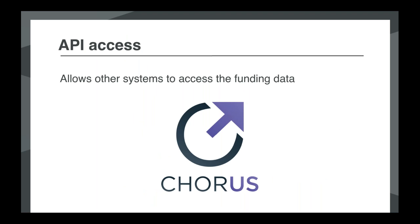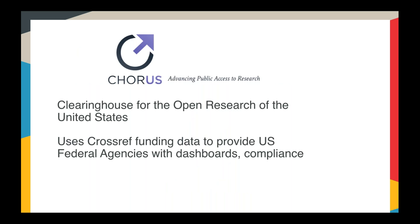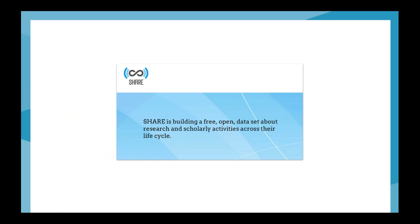Our API has also allowed third-party systems to make use of this funding data and build on top of it. One of the main systems doing that at the moment is Chorus, which is an initiative set up by publishers to use Crossref funding data to provide US federal agencies with reports and dashboards showing how much content is compliant with a particular funder's OA policy. Another partner using our interface is Share — the ARL's ShareNotify project — which generates a feed of research release events that subscribers can use to track the outcomes, outputs and impacts of specific research projects.